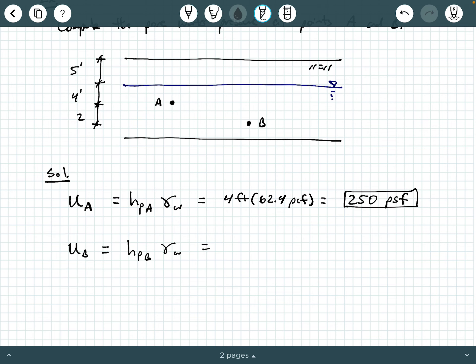So we're going to take the height of water above point B, and then we're going to multiply it by the unit weight of water. Well, what is that? Well, again, what's the height of water above point B?